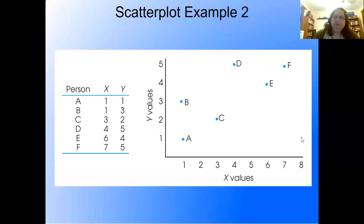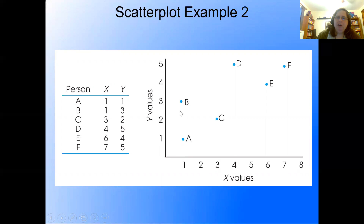Here's another example with X and Y values — it doesn't matter which we put where. We have six people: person A is at one and one, person B at one and three, person C at three and two, person D at four and five, person E at six and four, and person F at seven and five.